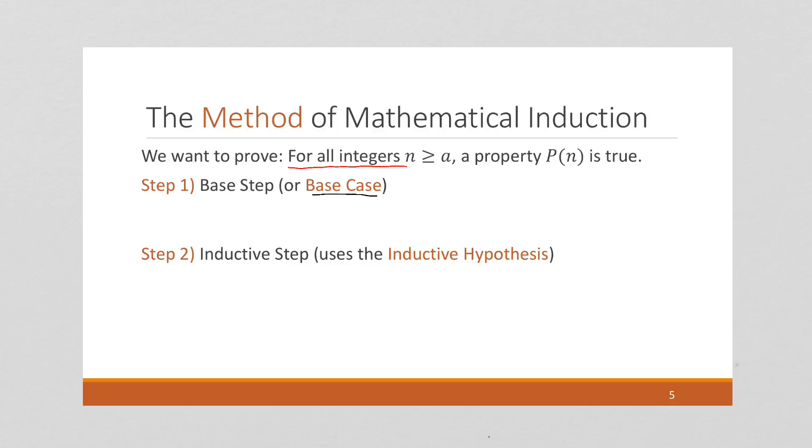So a is our starting value of our sequence, that some property is true about all the elements of the sequence, some property P of n.